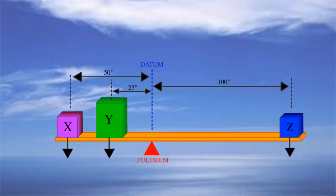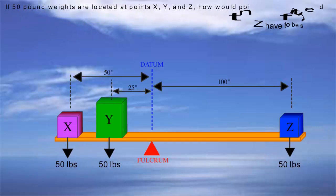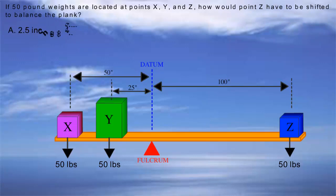This question brings you to the same figure, but says, if 50 pound weights are located at points X, Y, and Z, how would point Z have to be shifted to balance the plank? The possible answers are 2.5 inches to the right, 25 inches to the left, or 2.5 inches to the left.